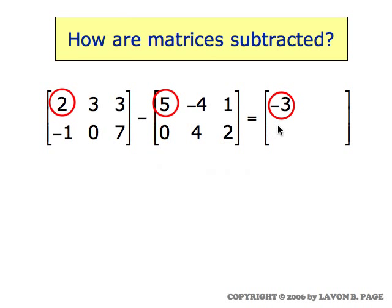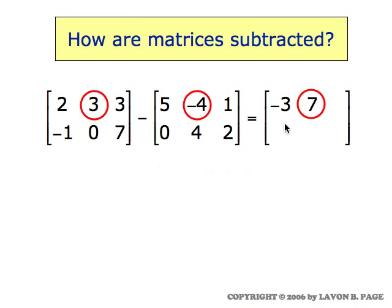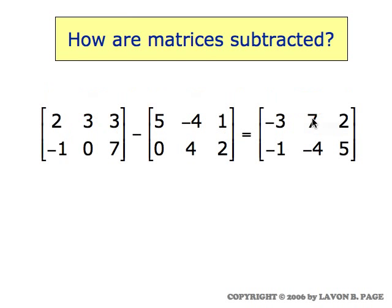For the first row first column spot, we do two minus five which is minus three. Moving to the next spot, row one column two, we have three minus a minus four, which is three plus four or seven, and you follow through all the calculations here to determine the difference of these two matrices, and this is what you should come up with.